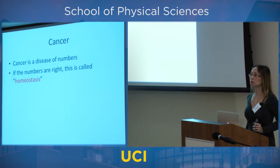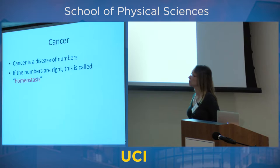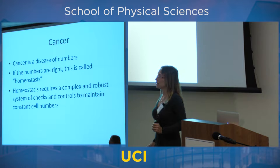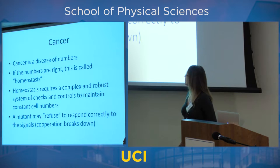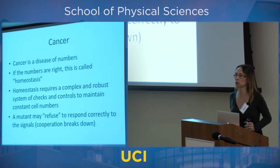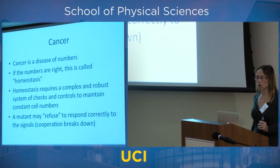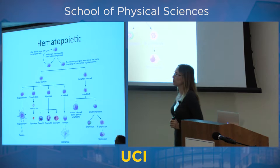When the numbers are correct, when everything is fine, that's what we call homeostasis. Maintaining homeostasis requires a very complex and robust system of checks and controls to maintain constant cell numbers. A mutant can refuse to cooperate, refuse to respond to commands from other cells, and begin to behave selfishly — and that's the beginning of cancer.